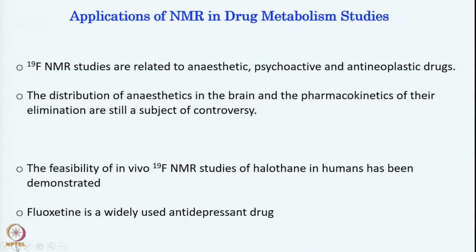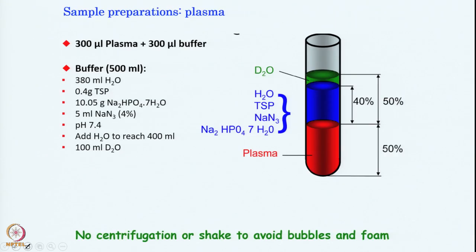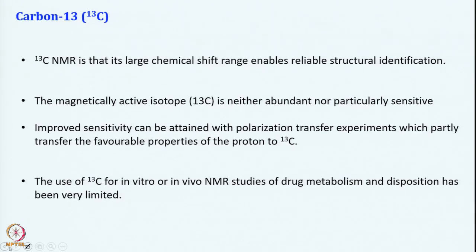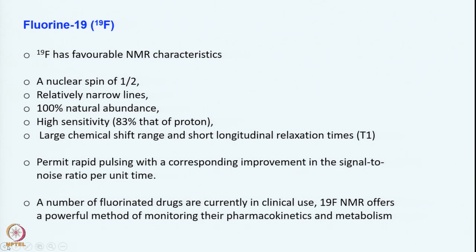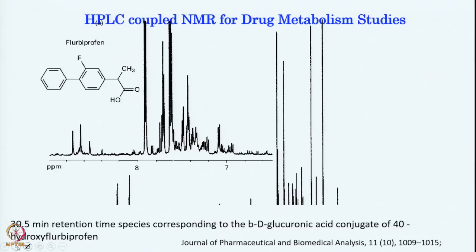Let us start with F-19 based nuclei. Just to remind you why F-19: F-19 is a spin-half nucleus, so it has a spin angular momentum of half, giving a relatively narrow line. Sensitivity is very good — about 83 percent of proton. It is 100 percent natural abundance, and most importantly it has a short relaxation time T1, meaning you can repeat this experiment very fast. The spectral width is very large, so you can distinguish signals coming from different origins of F-19. Because of all these good properties, F-19 can be used beautifully and exclusively in an in vivo setting.